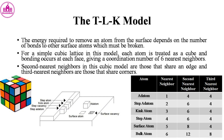The energy required to remove an atom from the surface depends on the number of bonds to other surface atoms which must be broken. For a simple cubic lattice in this model, each atom is treated as a cube and bonding occurs at each face, giving a coordination number of six nearest neighbors. Second nearest neighbors are those that share an edge, and third nearest neighbors are those that share corners.